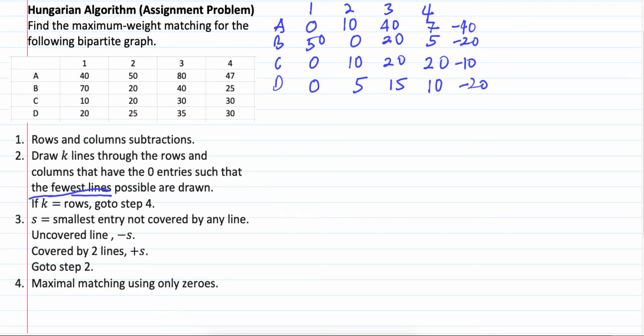Ok. So, the next step is, we subtract columns. A, B, C, D. 1, 2, 3, 4. This column, you have 0. So, don't do anything. This column, you have 0. Don't do anything.